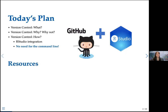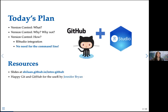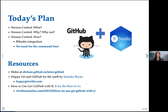You can find these slides at shalan.github.io/intro-github if you want to follow along. The number one resource I recommend for R users who want to start using version control is Happy Git and GitHub for the User by Jennifer Bryan — it's an excellent book, and my slides mimic some of its chapters. There's also a great condensed blog post on the R for the Rest of Us website.